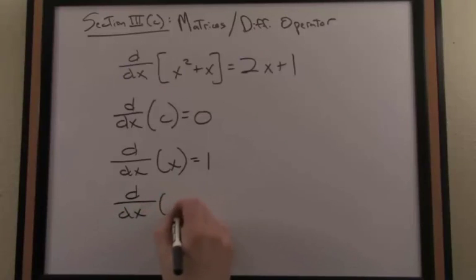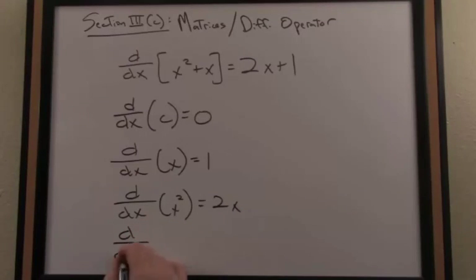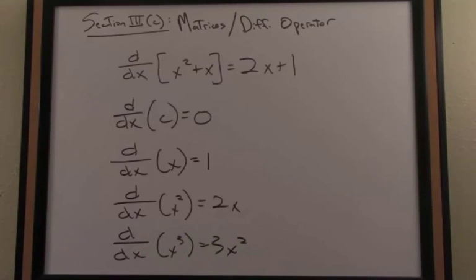The derivative, on the other hand, of x² with respect to x is 2x. And the derivative of x³ with respect to x is 3x². I'm just using something called the power rule in differential calculus.